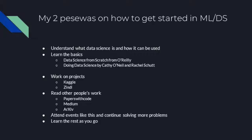ArXiv is a platform where research papers are mostly published. You can download almost every machine learning research paper from there. And attend events like this and continue solving problems — it becomes very important when you're at events like this because you get to meet people who are also interested in what you're interested in. You can start conversations, form teams to work on projects, and that's a very good way to get started.